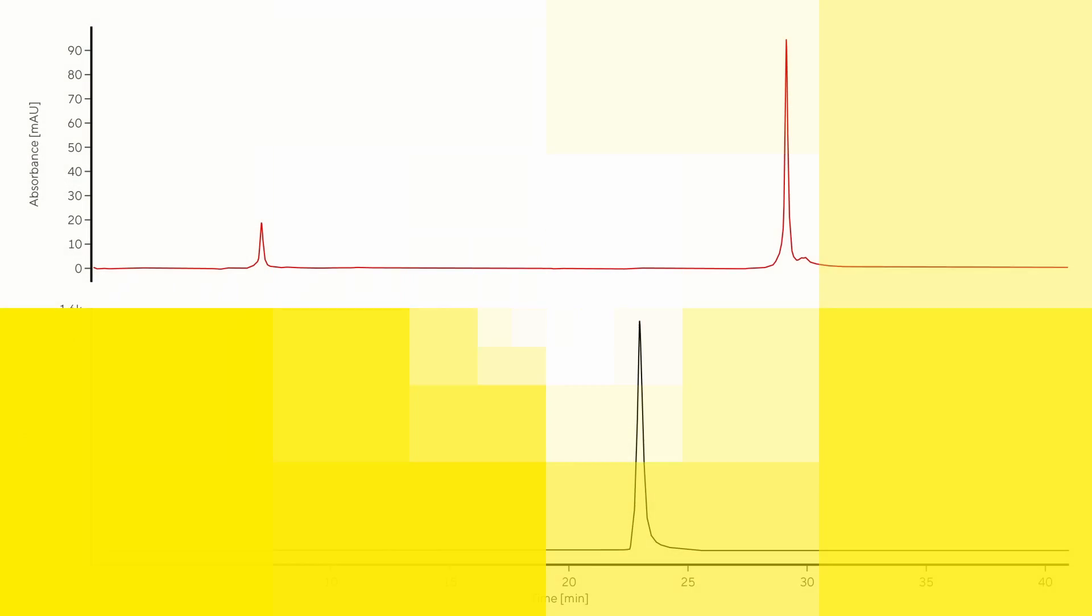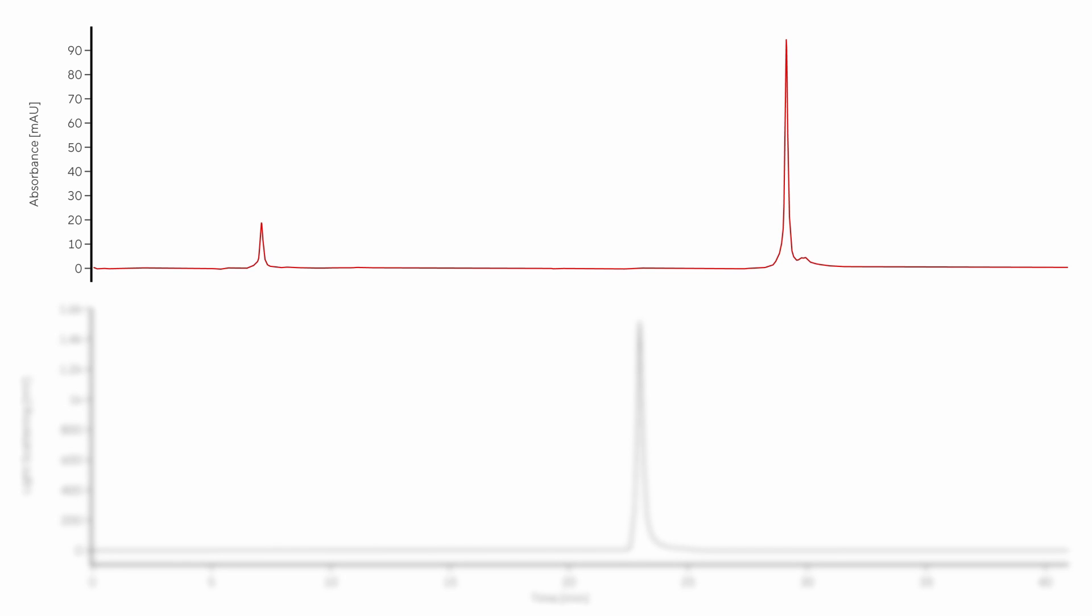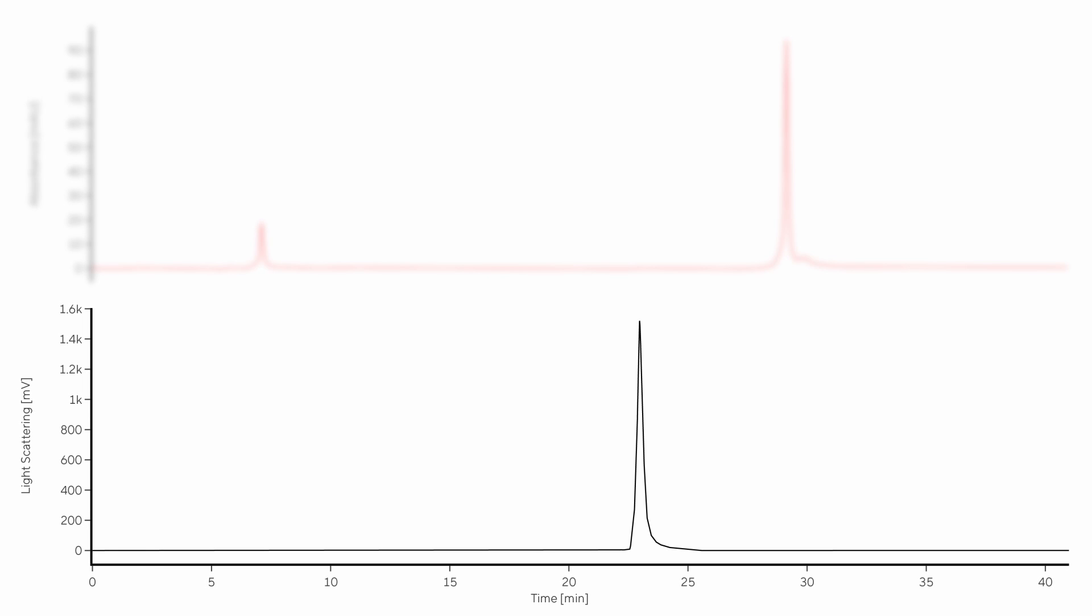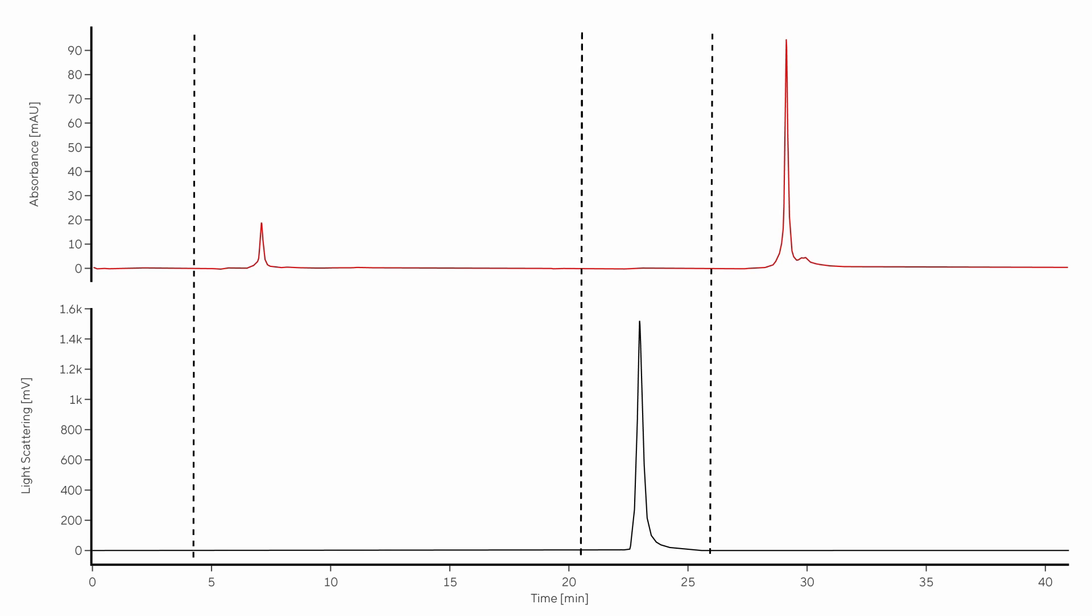This sample chromatogram shows an LMP encapsulating mRNA. The two signals are absorbents at 260 nm in red and a light scattering at 90 degrees in black. The chromatogram is divided into four sections, corresponding to the four steps of the analysis: Load, non-encapsulated mRNA analysis, LMP elution and encapsulated mRNA analysis.